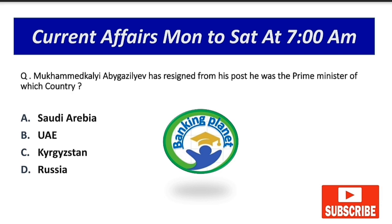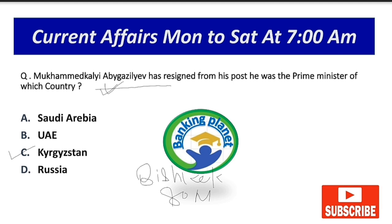Next: A leader named Mukhammedkaliy Abylgaziev has resigned from his post. He was the Prime Minister of Kyrgyzstan, and resigned amid an ongoing investigation against him. The capital of Kyrgyzstan is Bishkek and its currency is the Som.